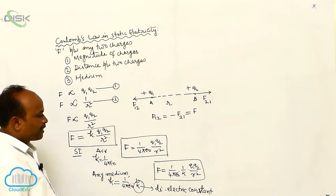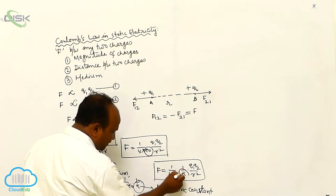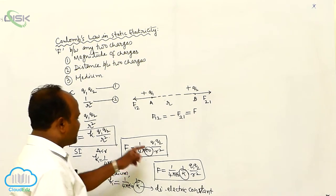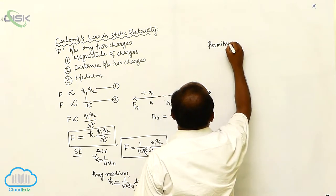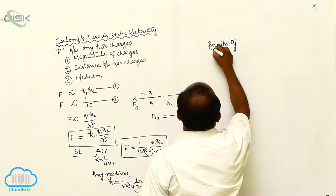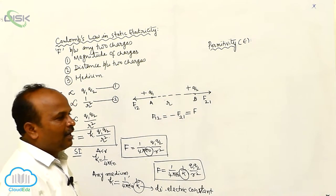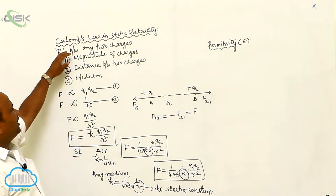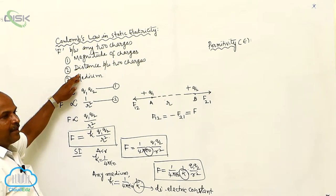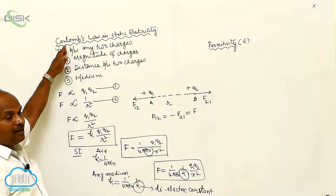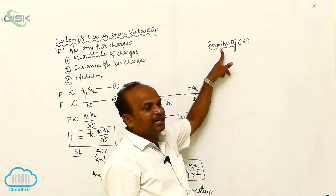Now, in this formula, there is a new physical quantity called permittivity. The force between any two charges depends on the magnitude of the charges, the distance between the two charges, and the medium. How the medium affects the force between the two charges can be explained through a quantity called permittivity.